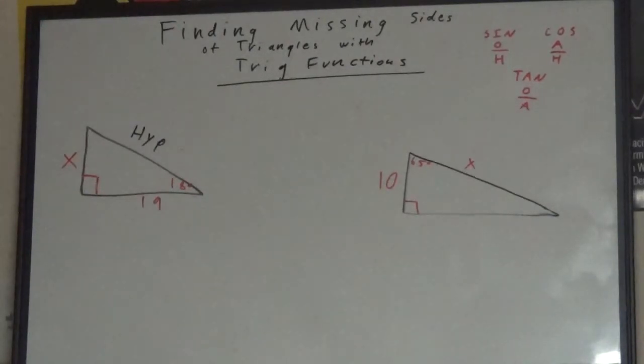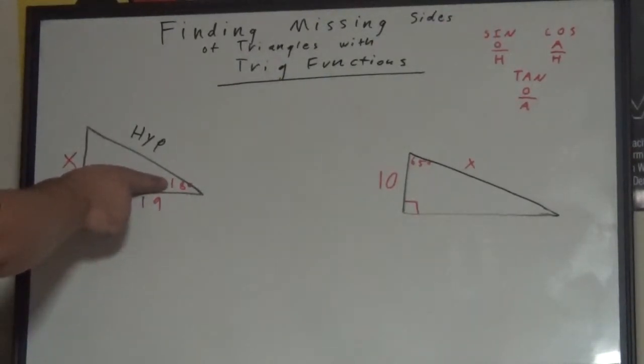Secondly, we want to find the adjacent side. We're given an angle measurement other than the right angle. This angle measurement says 18 degrees,